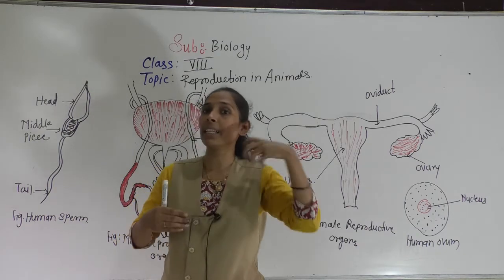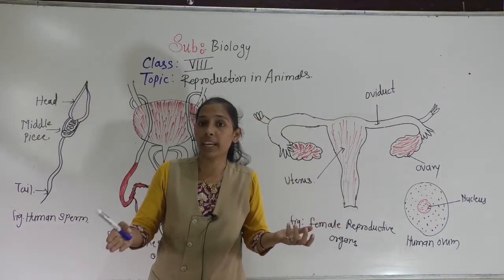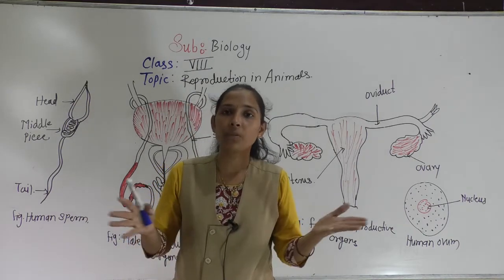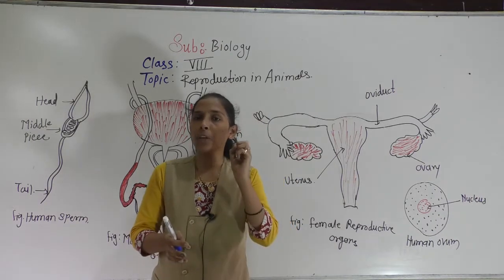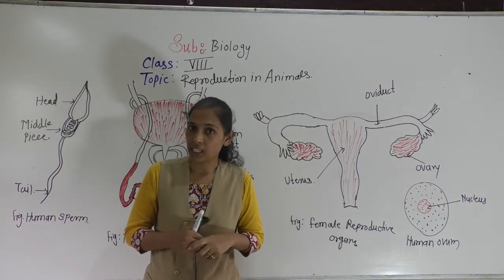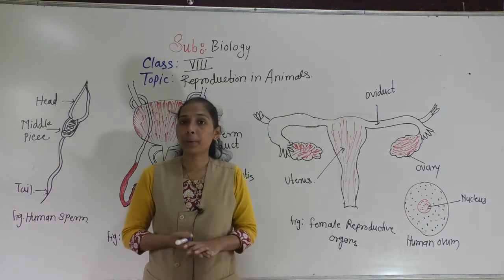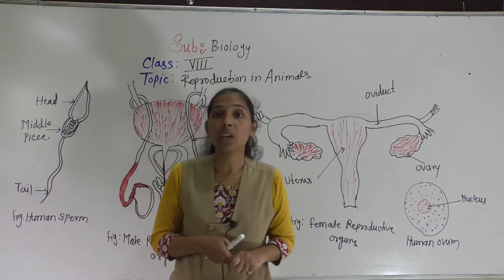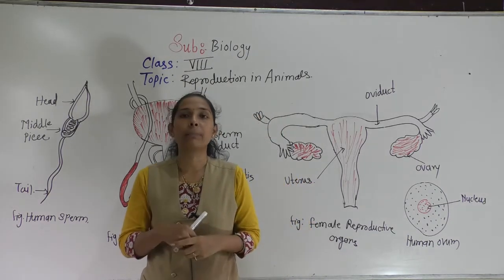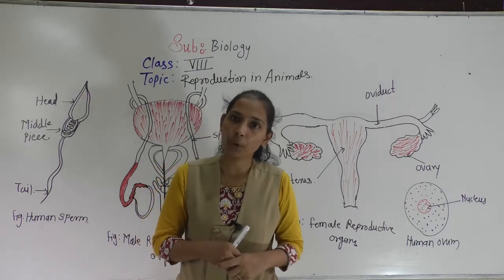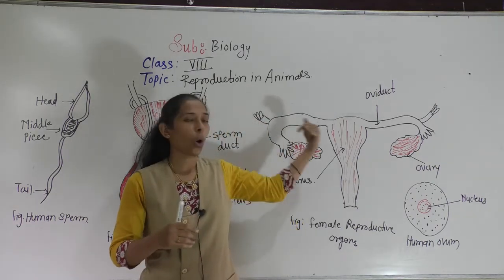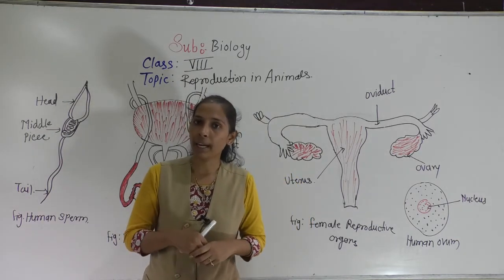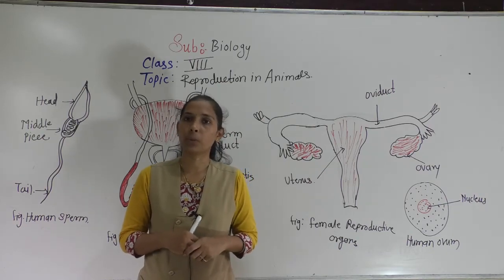Even though eggs and sperms are produced in large numbers, not all eggs get fertilized due to various environmental reasons — only a few eggs end up fertilized. Today we discussed male and female reproductive organs and external fertilization. Your homework is to draw all these diagrams in your biology notebook. We will meet in the next video with the next point. Thank you and goodbye.